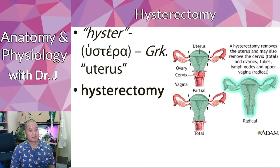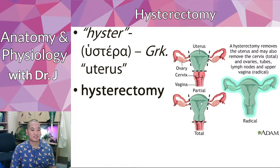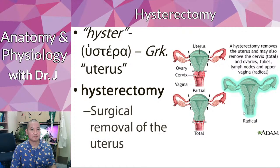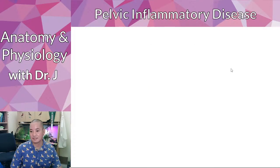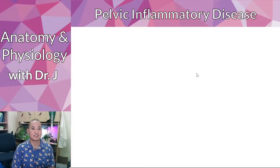There are different degrees of hysterectomy: partial removes some of the uterus but keeps the cervix; total removes the uterus and cervix; and radical removes the uterus, cervix, and part of the upper vagina.